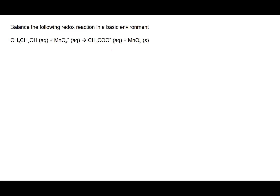The way that we approach it is that we always want to write out the two half reactions and work from there. The first one is the ethanol reaction: CH3CH2OH forms acetate, CH3COO-. The other half reaction is MnO4- forms MnO2.